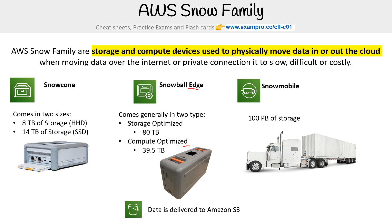What's interesting is that Snowmobile only does 100 petabytes, but AWS markets it as being able to move exabytes of content because you can order more than one of these devices. So they'll market Snowball Edge for when you want to move petabytes of data, and Snowmobile for when you want to move exabytes — but a single device isn't in the exabytes range, just the petabyte range.